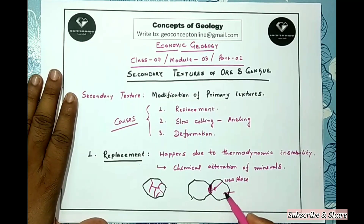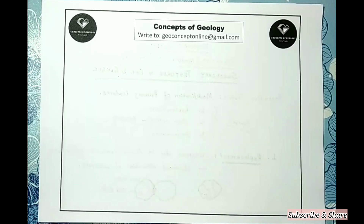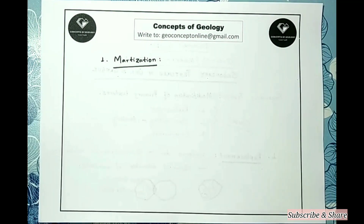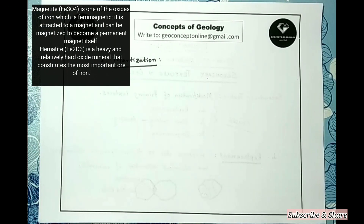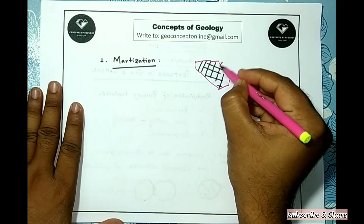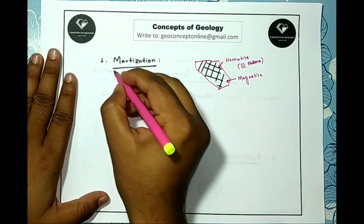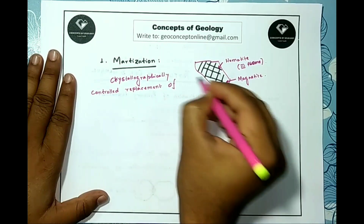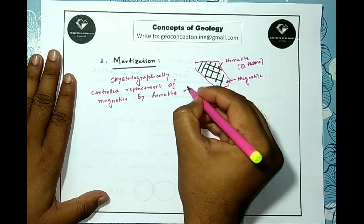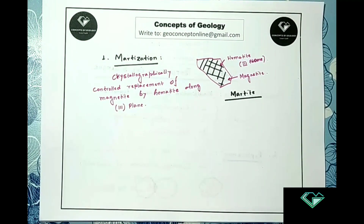The first texture we will discuss that is a result of replacement is called martitization. This is a crystallographically controlled replacement. We may find hematite replacing a magnetite grain along the {111} plane. So martitization is the crystallographically controlled replacement of magnetite by hematite along the {111} plane, and grains showing this texture under the microscope are called martite.